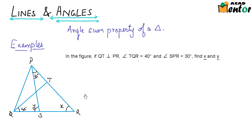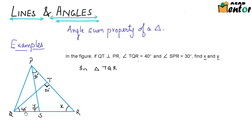How do we go about this? First of all, we are given QT perpendicular to PR. That means this particular angle right here is 90 degrees. Now if you just look at triangle TQR, we know values of two angles — we know this angle and we also know this angle. So we can easily find out the value of x by using the angle sum property.